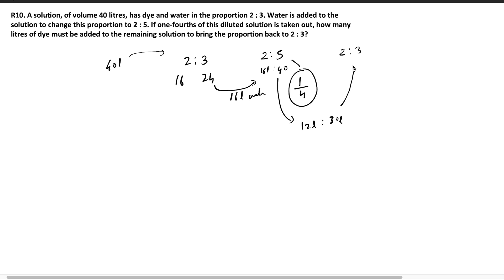Now the question is to bring back the ratio to 2 is to 3. So how can you do that? You have 12 liters of dye, you have 30 liters of water. You need the ratio to be 2 is to 3, which means if you add 8 liters of dye, it will become 20 liters and water will be 30 liters. So the ratio will be 20 by 30, 2 is to 3. So the answer is you need to add 8 liters of dye to this solution to bring back the ratio to 2 is to 3.